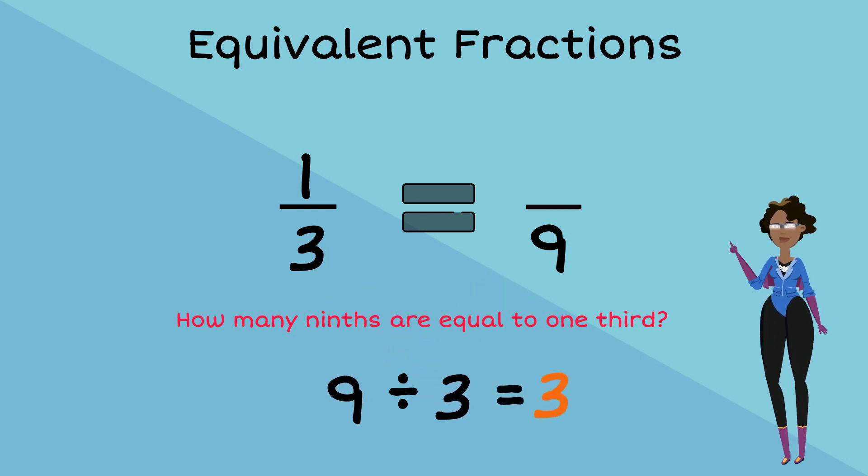This means our numerators are related by the multiple of three as well. We multiply the numerator one by three to give us three. Therefore, one-third is equivalent to three-ninths.